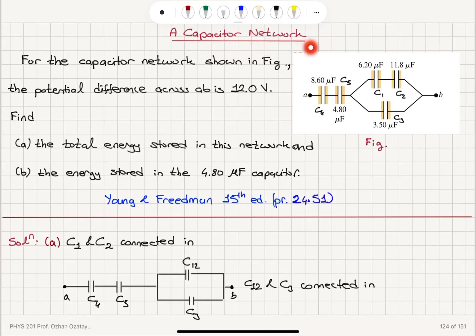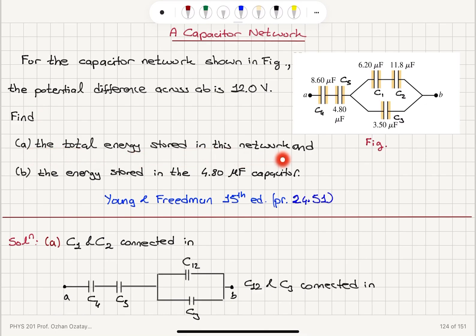A capacitor network. For the capacitor network shown in the figure, the potential difference across AB is 12 volts. Find A, the total energy stored in this network, and B, the energy stored in the 4.8 microfarad capacitor.